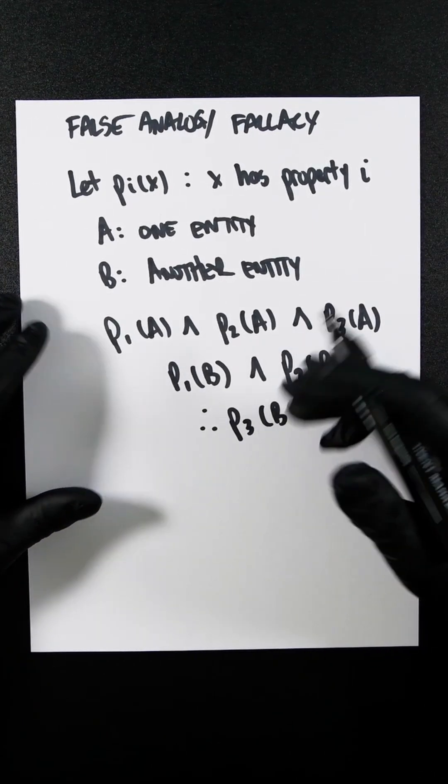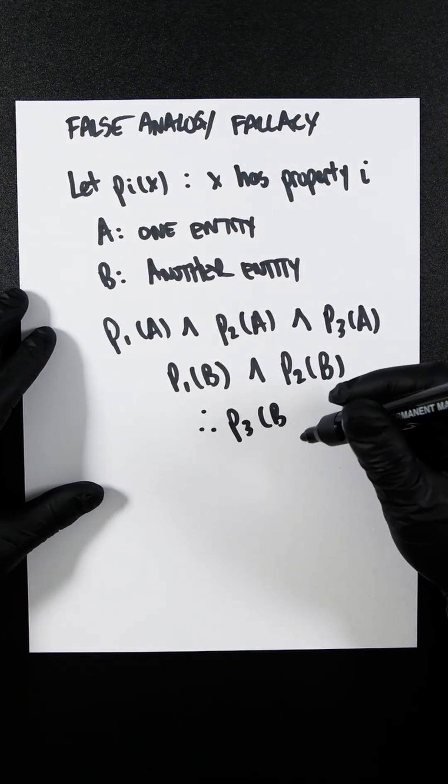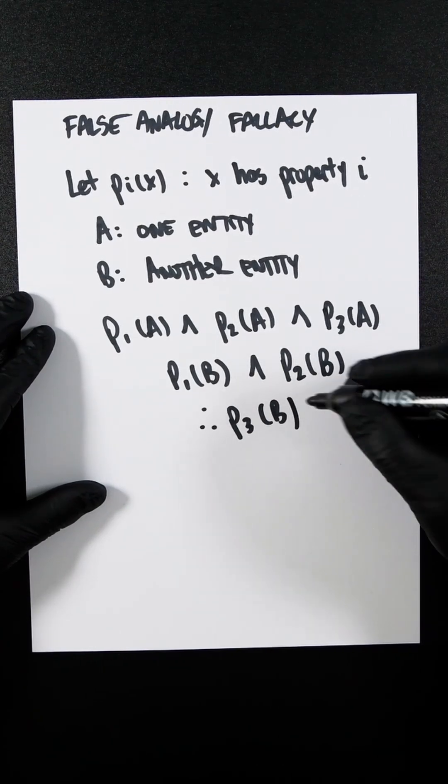So the argument is invalid unless properties P1 and P2 are relevant to P3, which obviously would make these invalid.